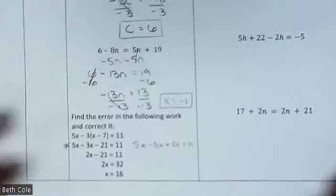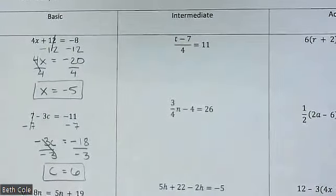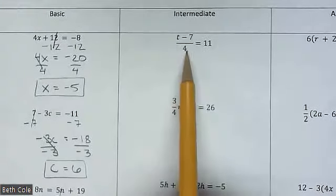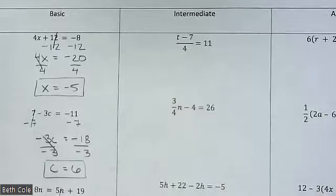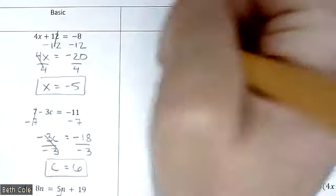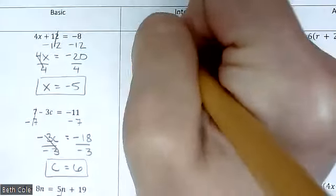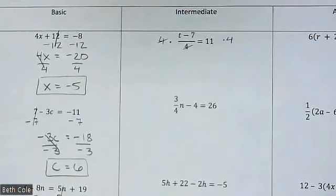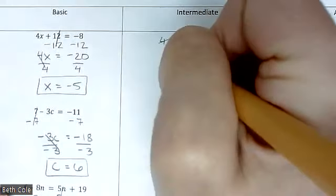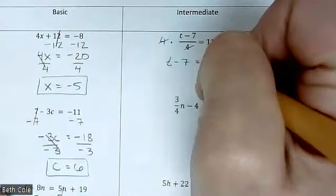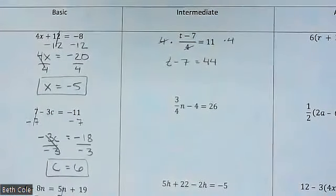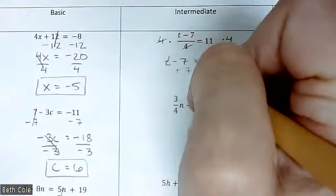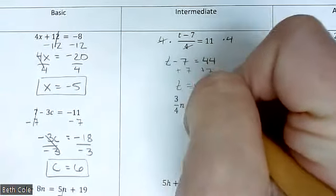All right, so now we're on to the intermediate ones — getting slightly more difficult. What does this bar mean? Division. That means you are going to multiply — whatever's there, you do the opposite; you're trying to undo what's there. So that would give you t minus 7 equals 44, and then plus 7 plus 7 — t is 51.